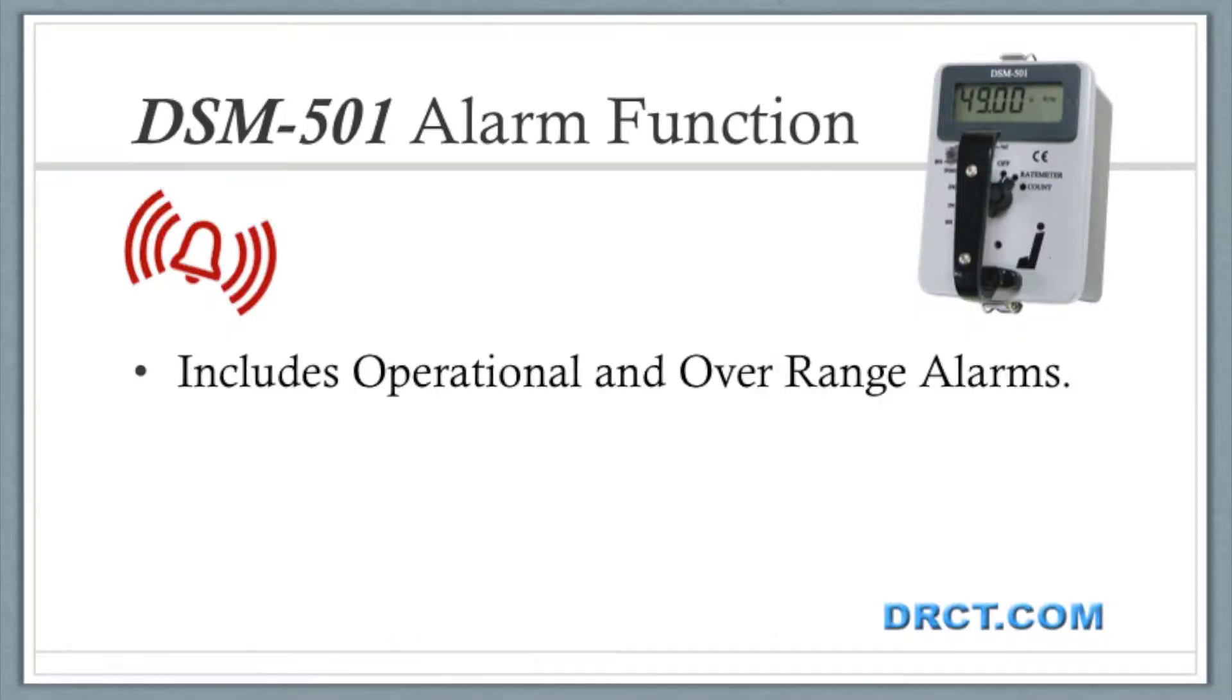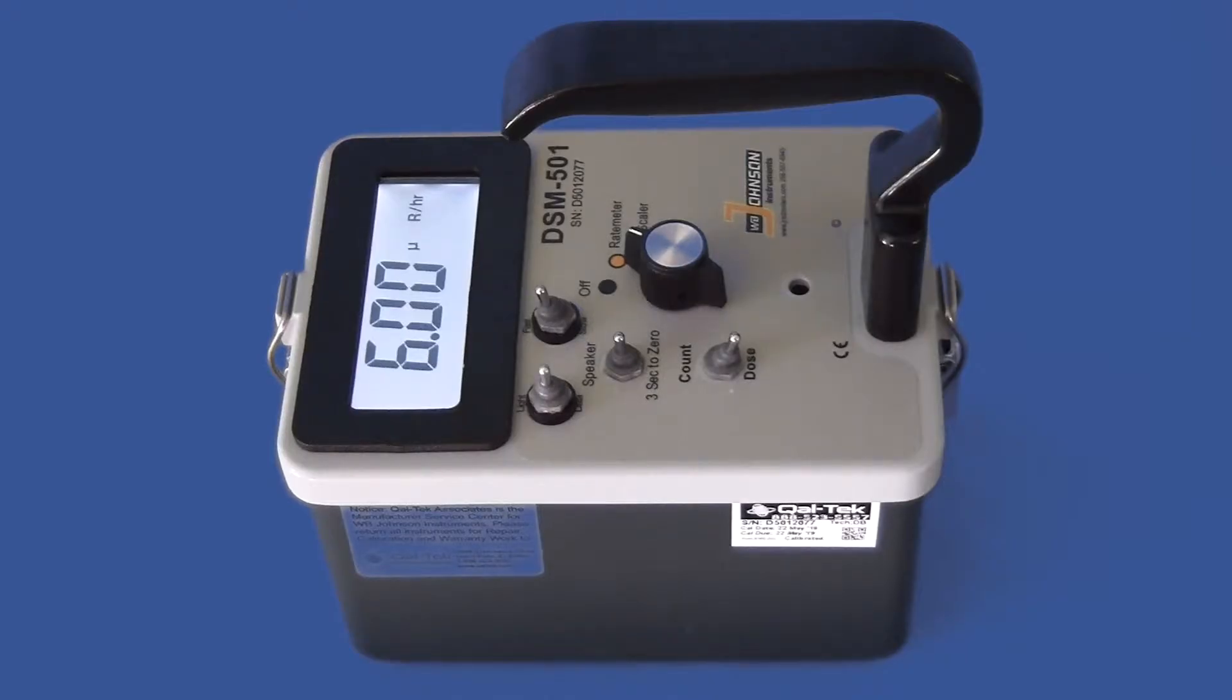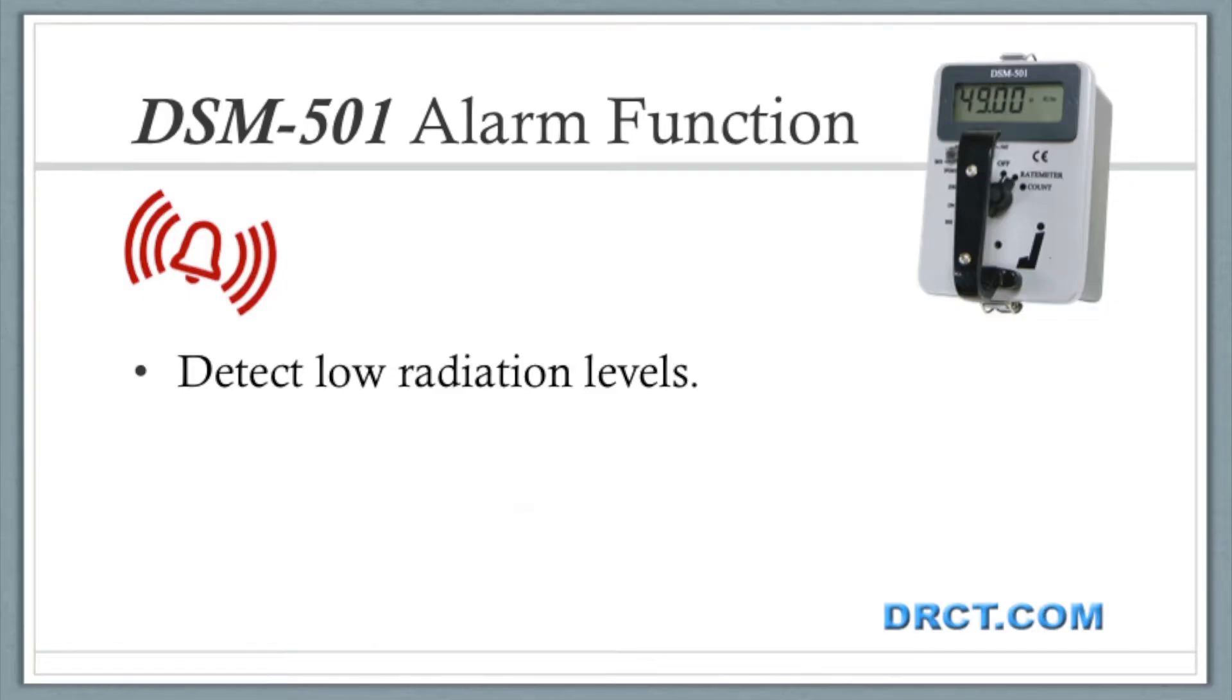The DSM-501 includes both operational and overrange alarms. Both are user set. For the operational alarm set point, the rule of thumb is to set it at twice the background. Our background is about 7 microroentgen per hour. For our demonstration, we will set it at a little over, at 20 microroentgen per hour. This helps us locate low-level radiation while avoiding excess noise.